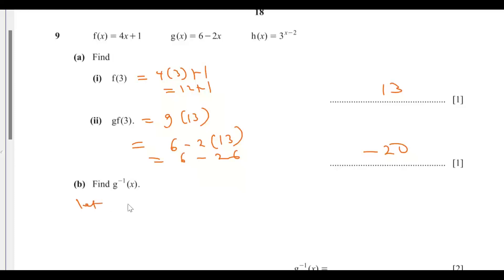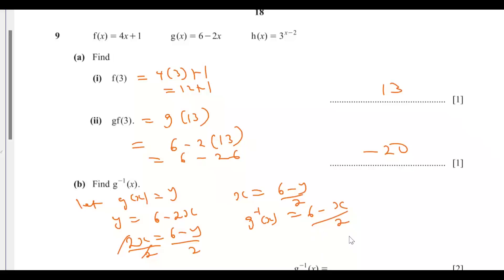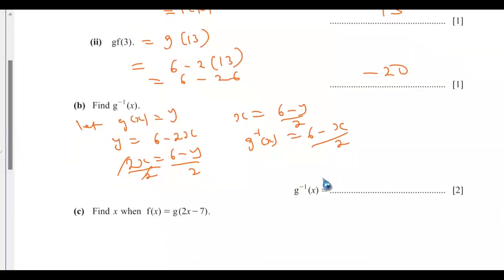For part b, find g inverse of x. Let g(x) equal y, so y equals 6 minus 2x. Making x the subject: 2x equals 6 minus y, so x equals (6 minus y)/2. Replacing x with g⁻¹(x) and y with x, we get g⁻¹(x) equals (6 minus x)/2.